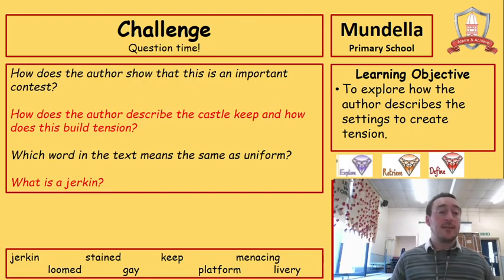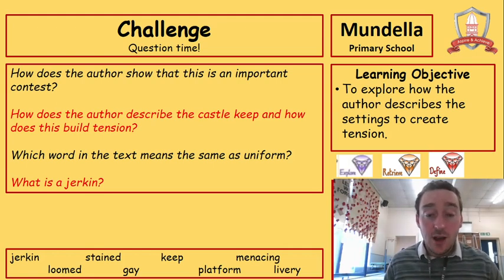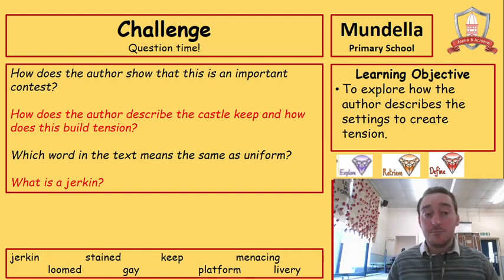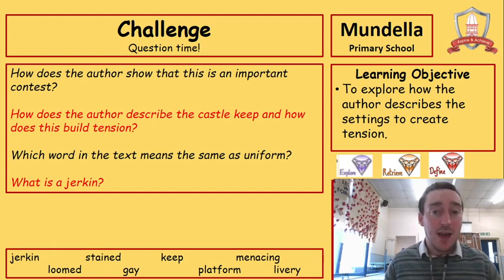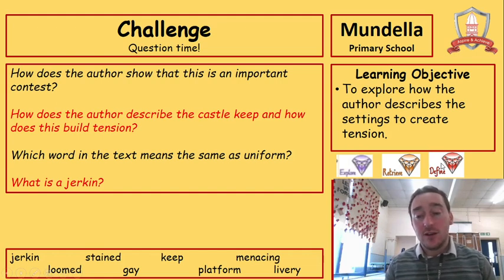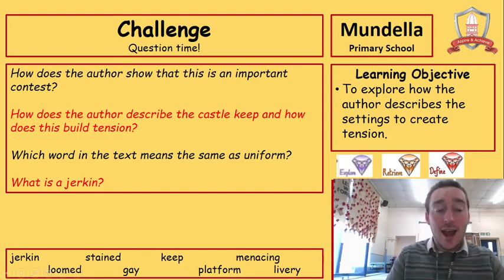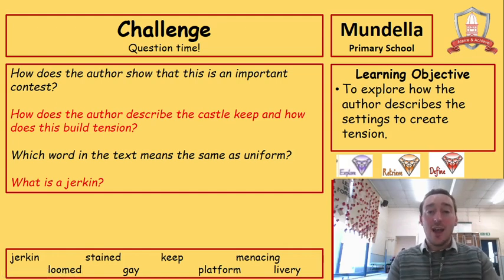Here are our four questions. Firstly, how does the author show that this is an important contest? How does the author describe the castle keep, and how does this build tension? Which word in the text means the same as uniform? And finally, what is a jerkin? You've got our explore, retrieve, and define reading gems there. Pause the video now and see if you can answer those, then unpause and I'll go through my answers.